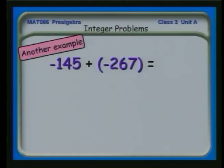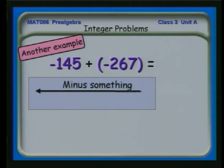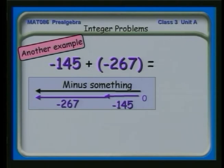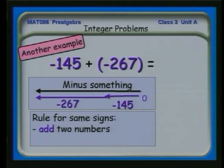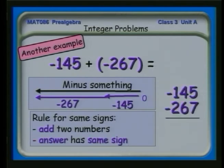Another example: minus 145 plus minus 267. In this case, we go to the left 145, then to the left another 267. For the same signs, we add the two numbers and the answer has the same sign. Adding those numbers gives us 412, and since both numbers are negative, the answer is minus 412.